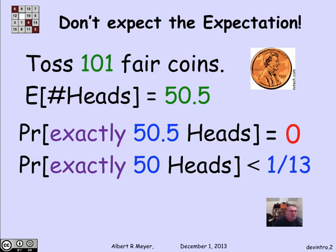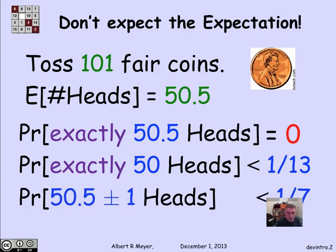Well, we can ask, what's the probability of getting as close as you could hope to get to the expectation? Namely, what's the probability of getting exactly 50 heads? And it's about 1/13th. Or if you ask, what's the probability of getting either 50 or 51 heads, being plus or minus 1 of the expectation, it's about 1/7th.